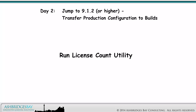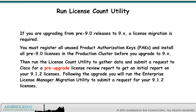Running the License Count Utility is a pre-upgrade task to consider. If you are upgrading from Pre-9.0 releases to 9.x, a license migration is required. You must register all unused product authorization keys and install all Pre-9.0 licenses in the Production Cluster before you upgrade to 9.x. Then run the License Count Utility to gather data and submit a request to Cisco for a pre-upgrade license review report to get an initial report on your 9.1.2 licenses.